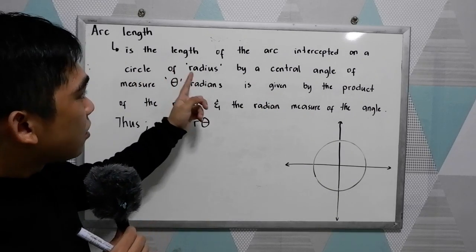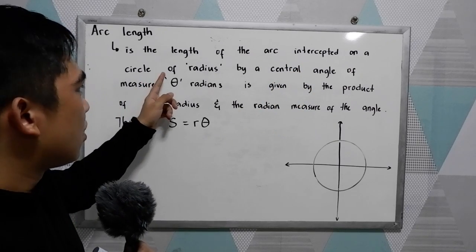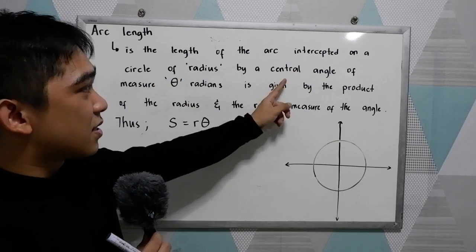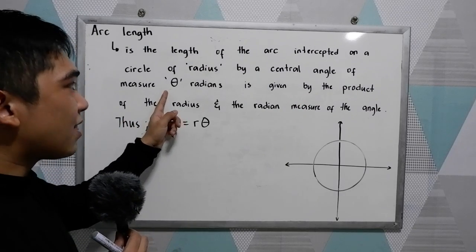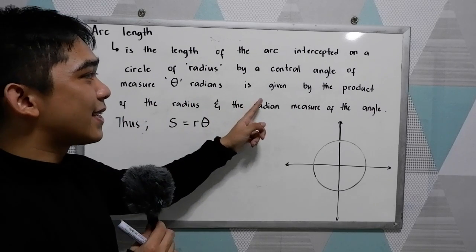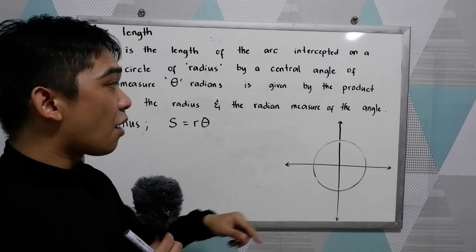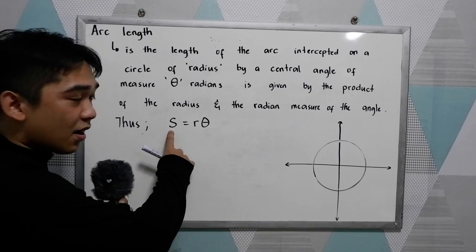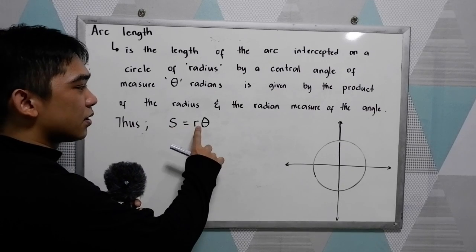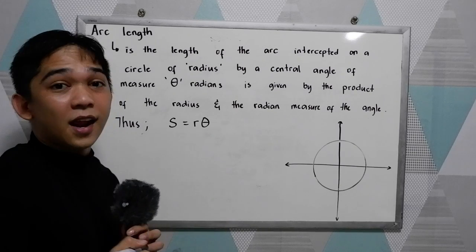It is the length of the arc intercepted on a circle of radius by a central angle. The measure theta region is given by the product of the radius and the radian measure of the angle. Thus we have the formula: S, the arc length, is equal to radius times theta or the central angle.